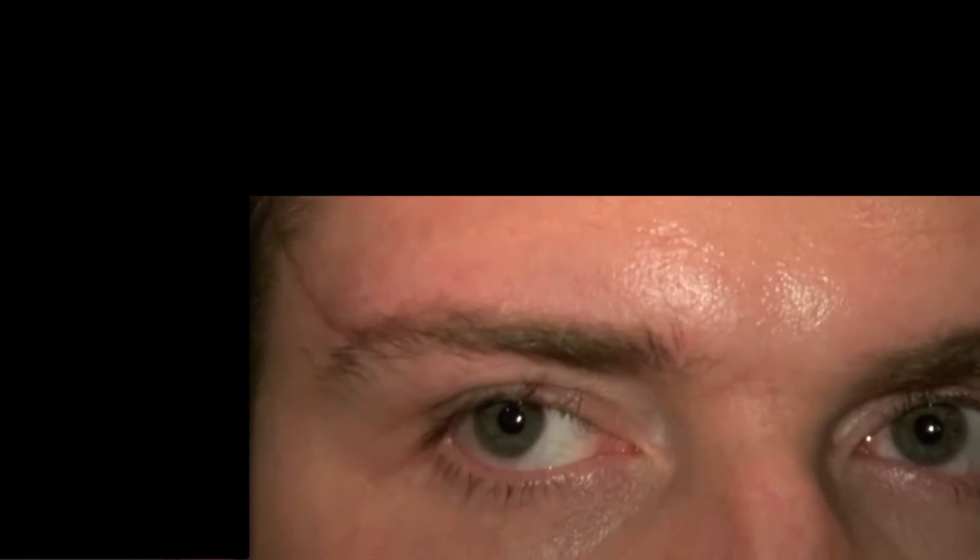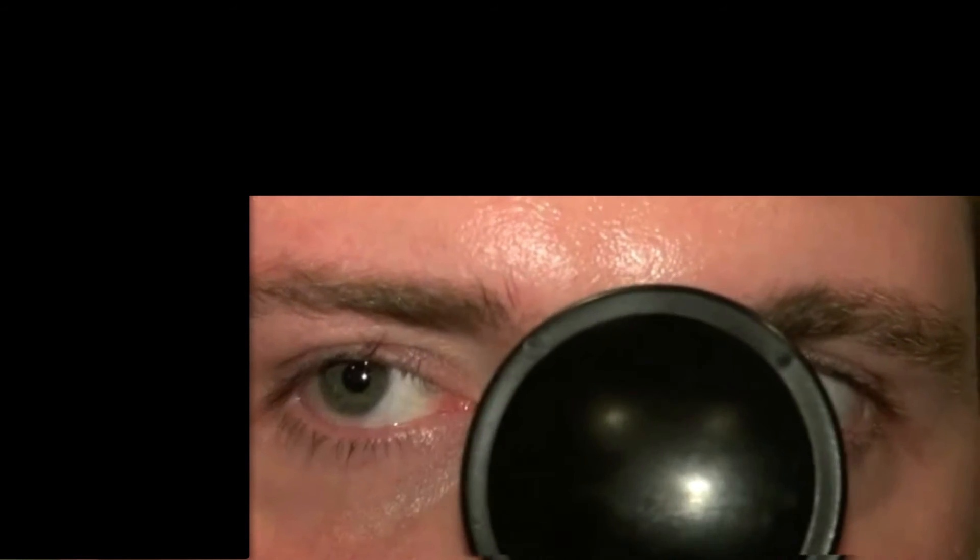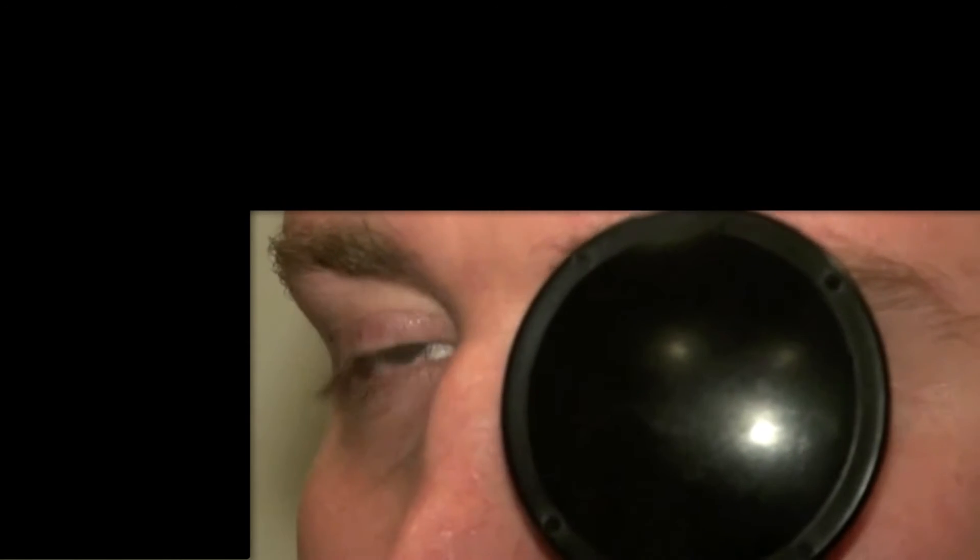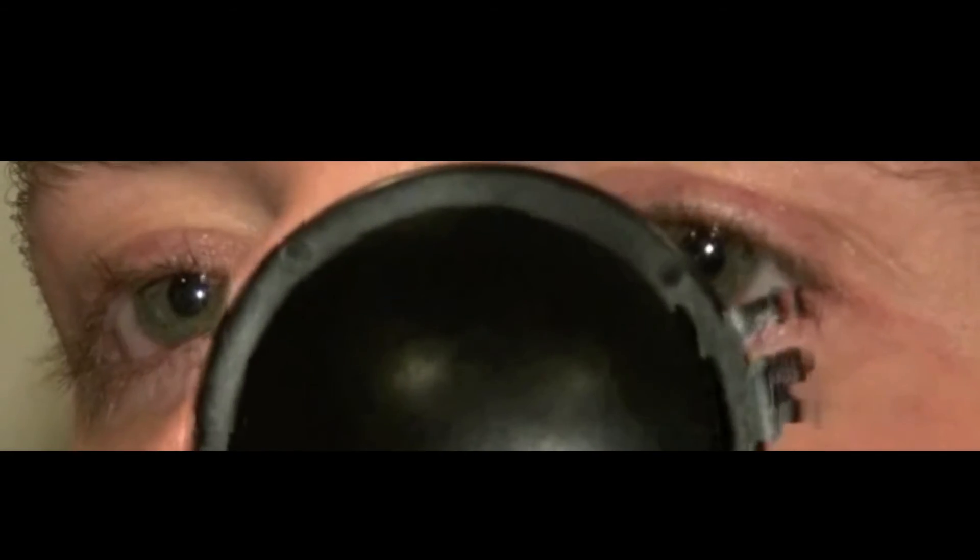In right gaze, the hypertropia disappears. The right hypertropia is most evident in left gaze, and especially when his eyes move into down gaze.